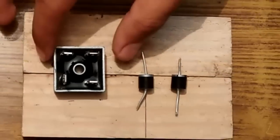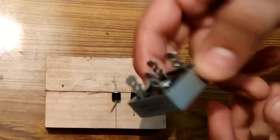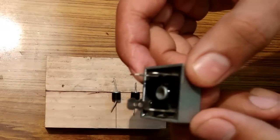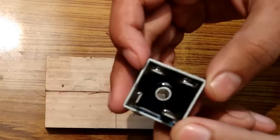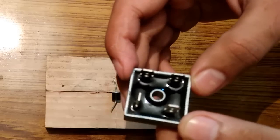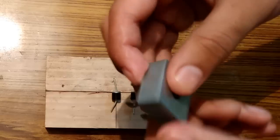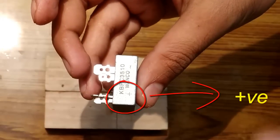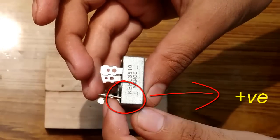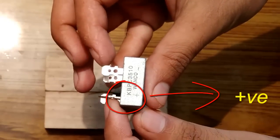So first what we need is a rectifier. A single phase rectifier looks like this. It has four terminals, two for AC and other two for positive and negative. It shows plus on this terminal, positive on this terminal and the AC on this terminal.